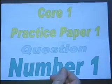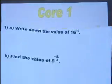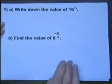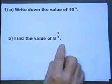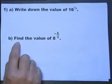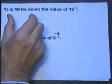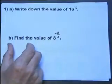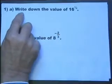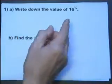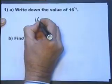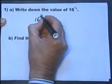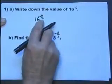This is exactly as it appears on the exam paper. Part (a) says write down the value of 16^½, and part (b) says find the value of 8^(-2/3). Now the wording in fact helps you appreciate what you've got to do. Write down implies you should know the answer straight away.